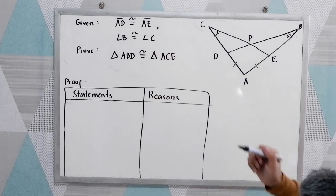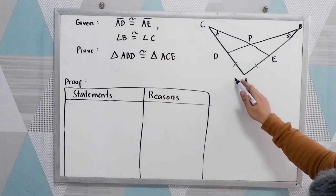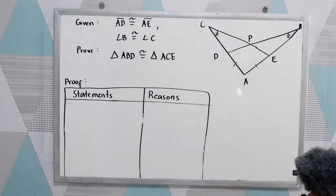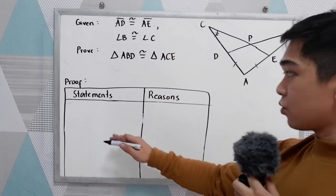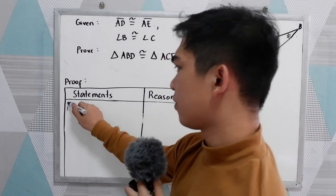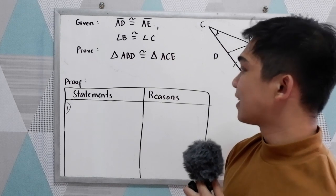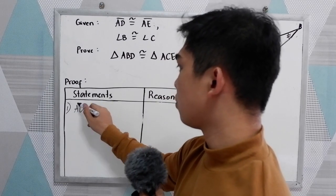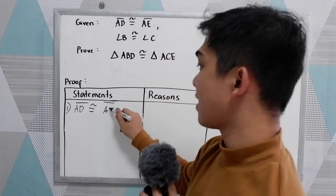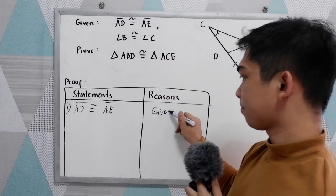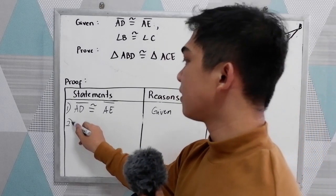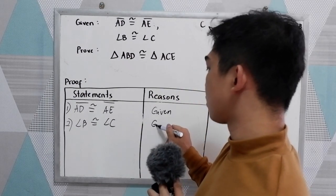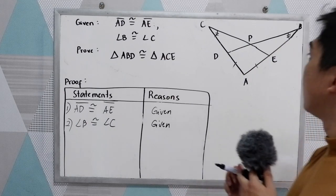We're going to prove that triangle ABD is congruent to triangle ACE using the two-column proof. In our statement and reasons, write all the given. So AD is congruent to AE — that is given. Second, angle B is congruent to angle C — that is also given.